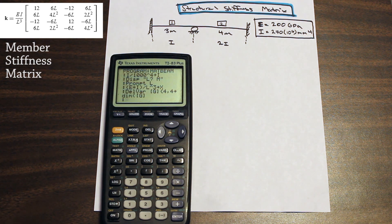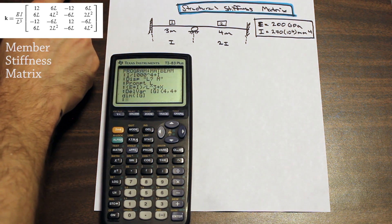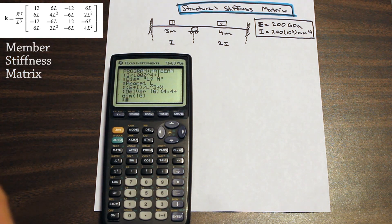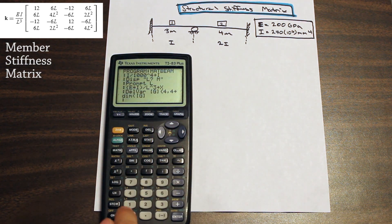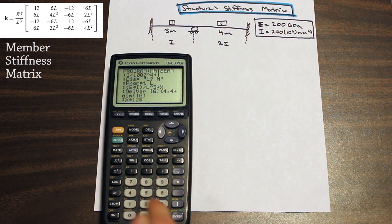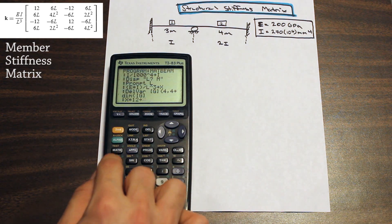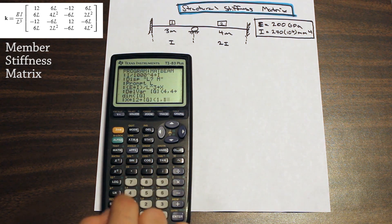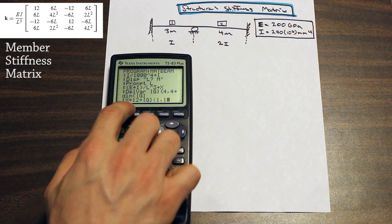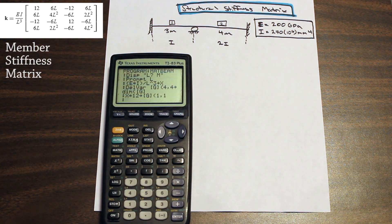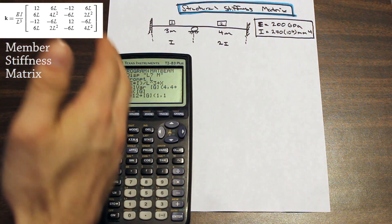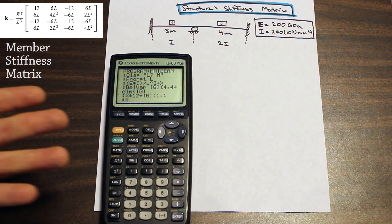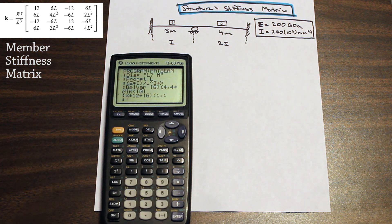Starting with row 1, column 1 — we have 12 times EI over L cubed. Since we stored EI over L cubed in X, we type X times 12 and store it into matrix G bracket 1,1. That puts the value into the first row, first column of matrix G. From this point, you fill out each row and column. It takes about 15 to 20 minutes, but that saves you a lot of time on the test.